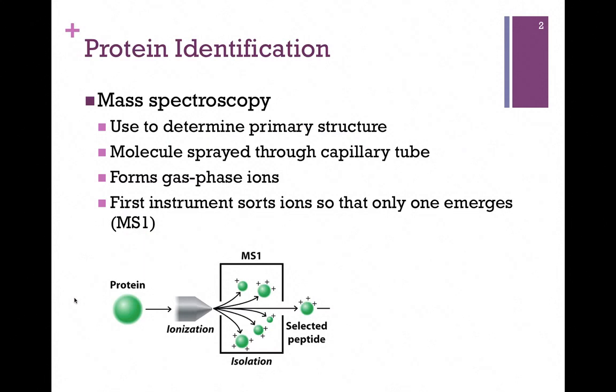In a previous video lesson, we saw that Edman's sequencing was a chemical means of determining primary structure - that is, the sequence of amino acids within a peptide or protein. In this case, we're going to use more of a physical method.